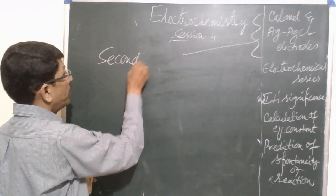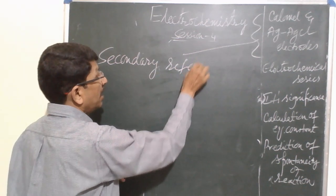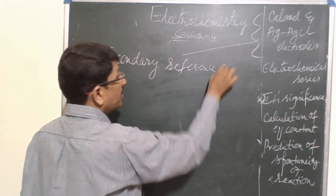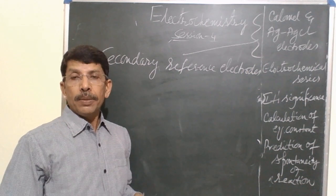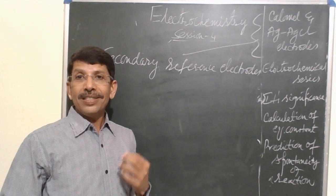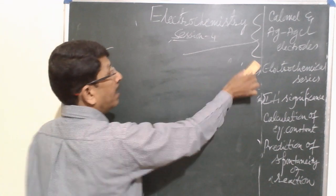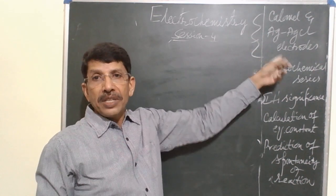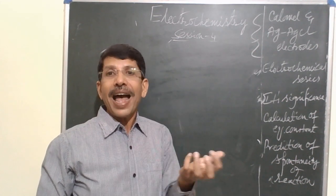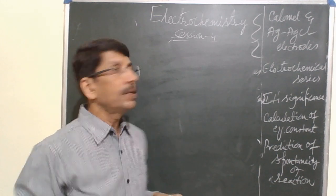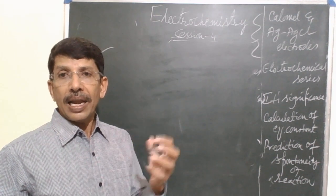The SHE is the primary reference electrode. The calomel electrode and silver-silver chloride electrode are called secondary reference electrodes. These are easy to construct, can be maintained for a longer period, and their electrode potentials are reproducible — we can always have a constant potential. Let us now see how to construct a calomel electrode.